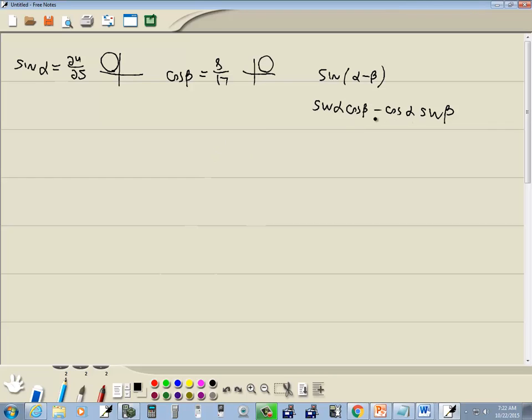In order to find this value then, you need these four items. We've got two of them. So let's take a look at the alphas first.